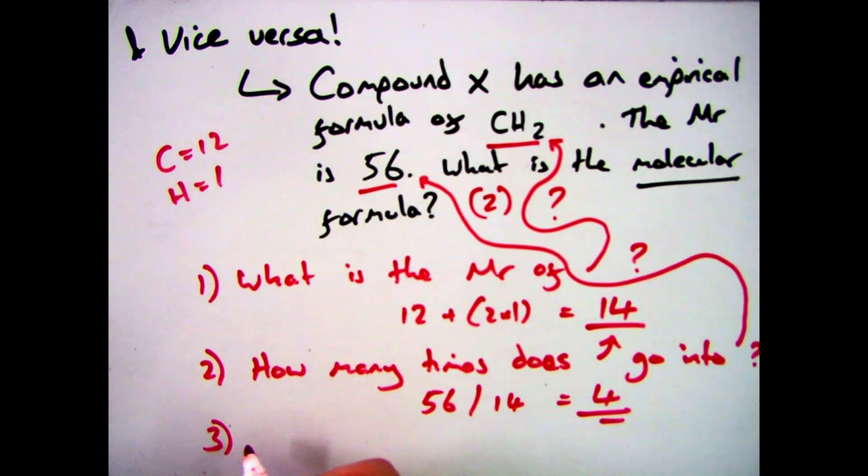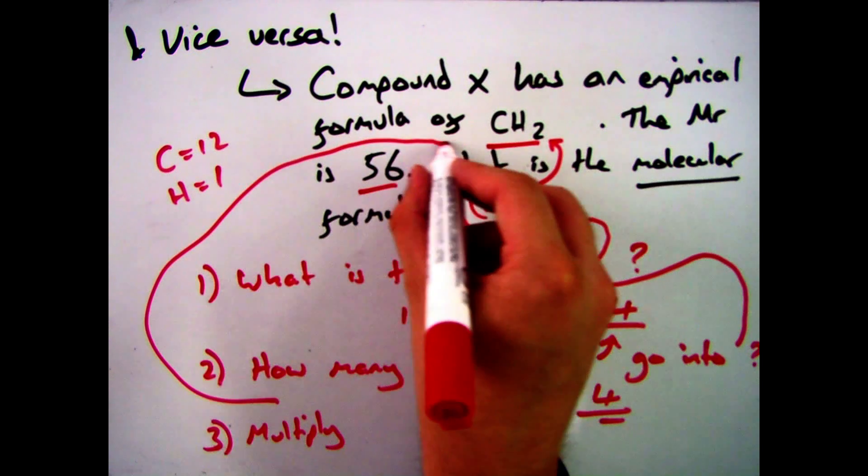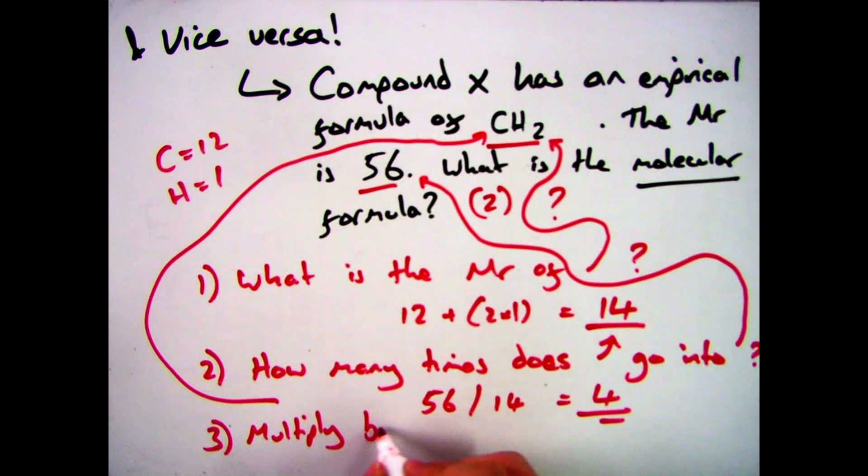And my final step then is, I know that I've got four lots of CH2, so I just multiply that up. So I have four carbons, and then 2 times 4 is 8 hydrogens, so my molecular formula is C4H8.